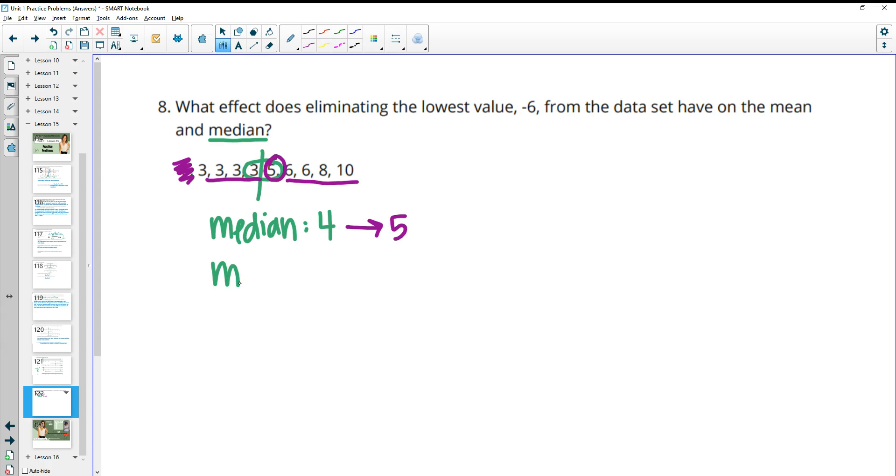Then when we look at the mean, we need to add all these values together. So if you add these up with the negative 6, you get 41, and we had 10 data values. So that original median is going to be 4.1. Then when we remove the negative 6, which actually increases our total to 47, when we add these values together, we get 47, and now we only have nine values. When we divide those, we end up getting a mean of 5.2. So the median and the mean are both increased. The median goes from 4 to 5, and the mean goes from 4.1 to 5.2.